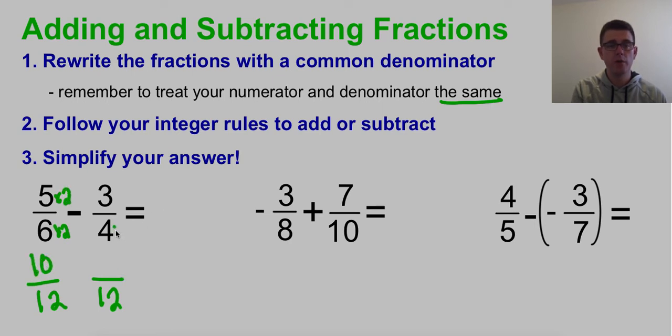To get from 4 to 12, I multiply times 3. So do the same thing up top. 3 times 3 is 9. And then it was a subtraction problem. When you have subtraction, if it looks like a problem that you could just subtract like you normally would, I'm okay with you leaving it as subtraction. If you prefer to change it to adding the opposite right away, that's totally fine because you're going to get the same answer.